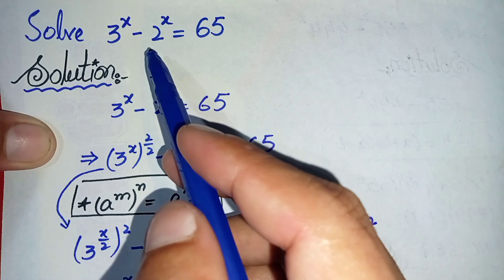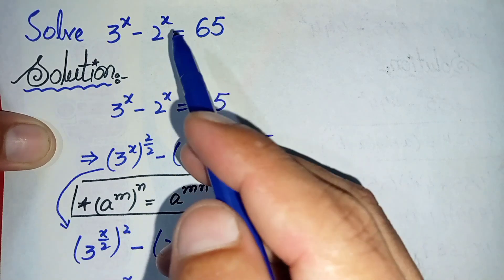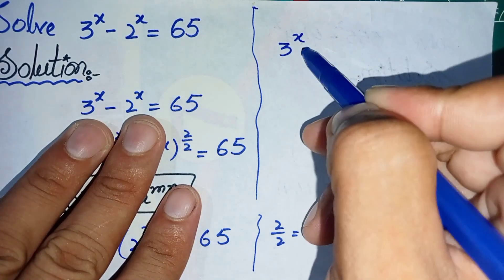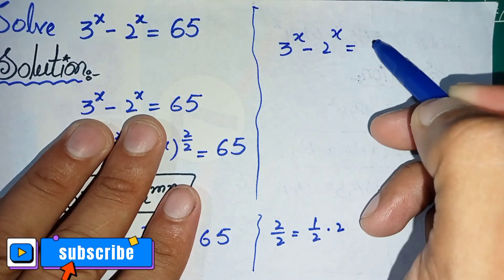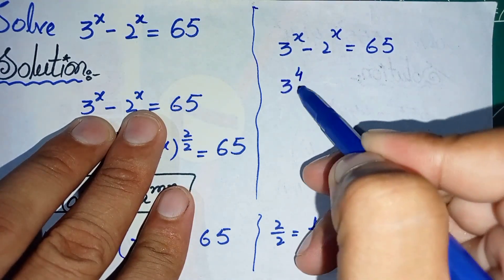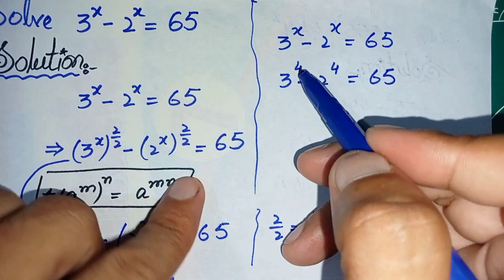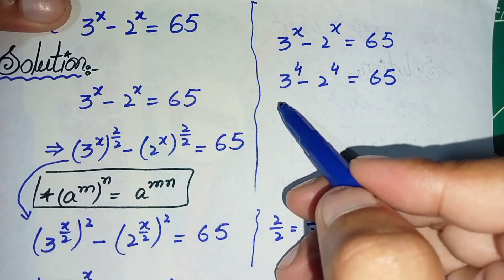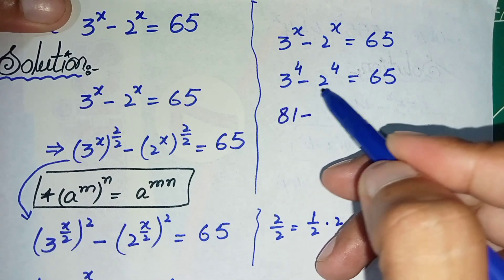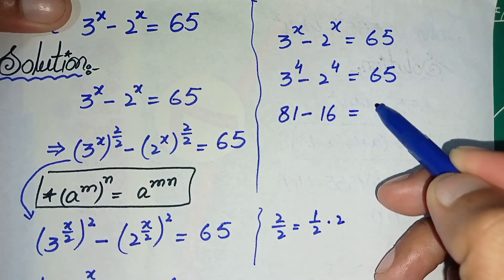Now we will verify that x equals 4 is the correct root of this equation. We write the original equation: 3 raised to power x minus 2 raised to power x equals 65, and substitute x with 4. It becomes 3 raised to power 4 minus 2 raised to power 4 equals 65. Now, 3 to the power 4 means 3 times 3 times 3 times 3: 3 times 3 is 9, times 3 is 27, times 3 is 81. And 2 to the power 4 gives 16.